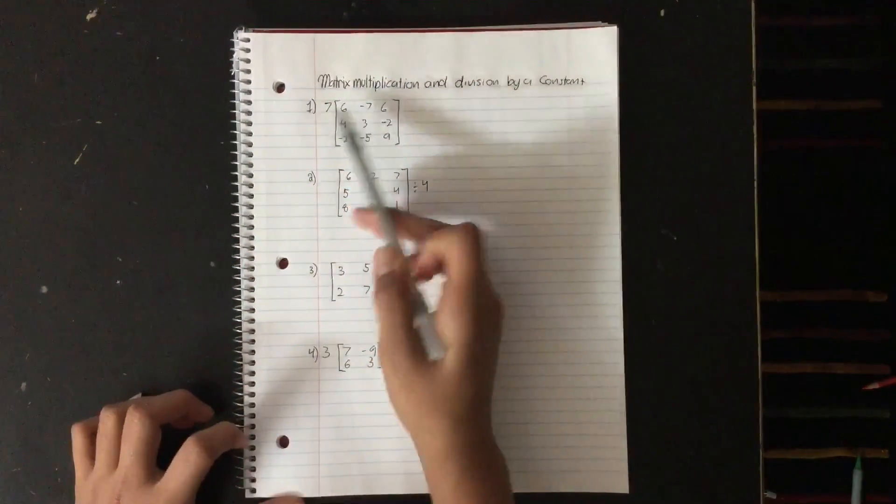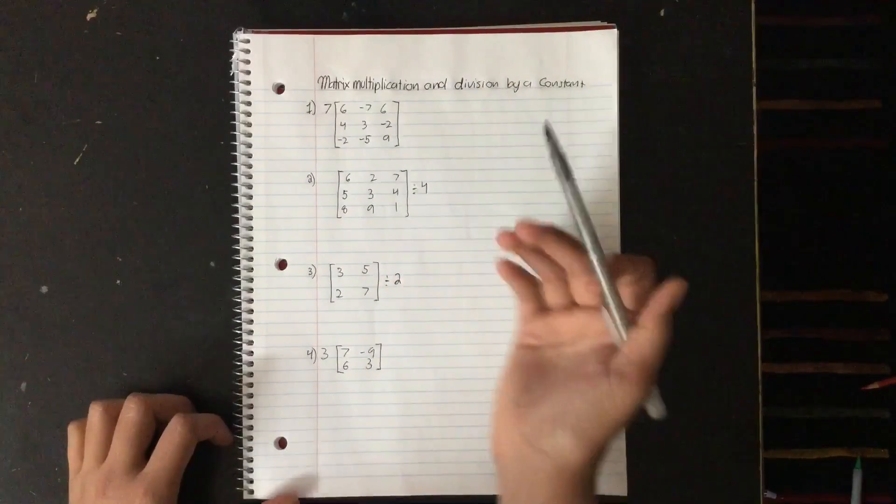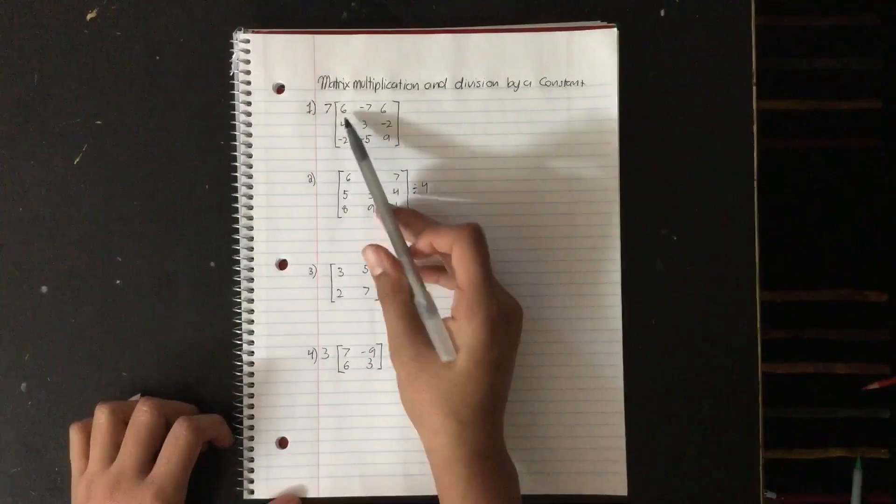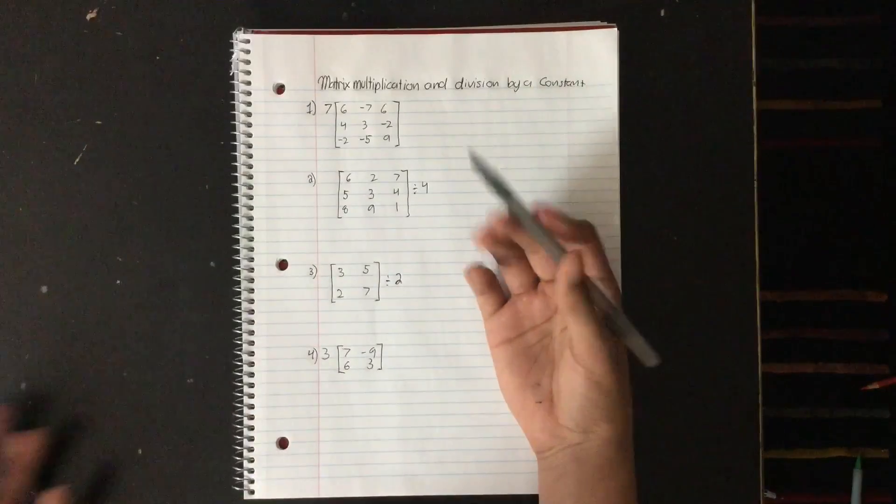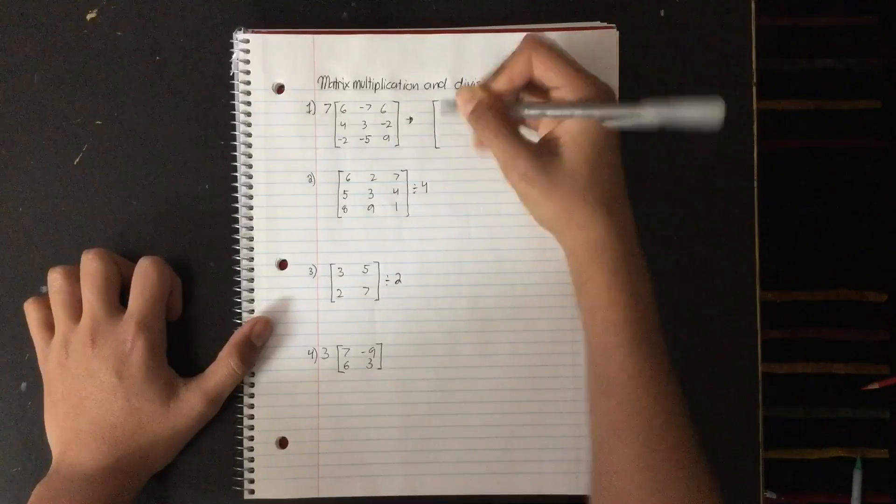So the first question we have here is multiplying 7 by this 3 by 3 matrix. So basically what you do is you multiply 7 by all the values on the inside, and then you're done. So let me just do it, and we just need to multiply it. So 7 times 6 is 42,